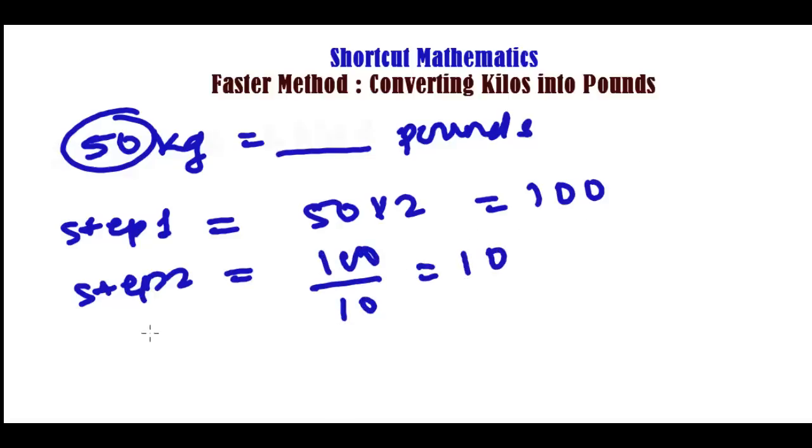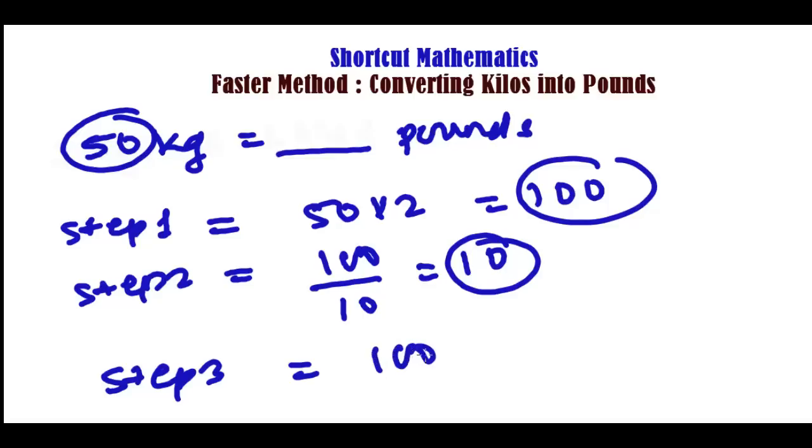And now step 3 is very simple, just add the first and the second, the step 1 answer and step 2 answer. That is 100 plus 10, that is 110. So 110 pounds, that's the answer, very simple.